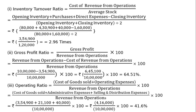That is equal to rupees 3,54,900 plus rupees 21,100 plus rupees 40,000, whole divided by rupees 10,00,000 into 100, which equals rupees 4,16,000 upon rupees 10,00,000 into 100, equal to 41.6%. This is the final answer.